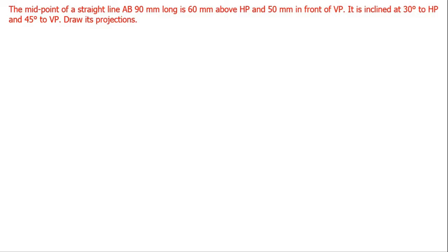Dear students, in this video we are going to see a typical line problem — a midpoint diagram. This is a very important diagram that is often repeated in most university question papers. The question: the midpoint of a straight line AB, 90 mm long, is 60 mm above HP and 50 mm in front of VP. It is inclined at 30 degrees to HP and 45 degrees to VP. Draw its projections.